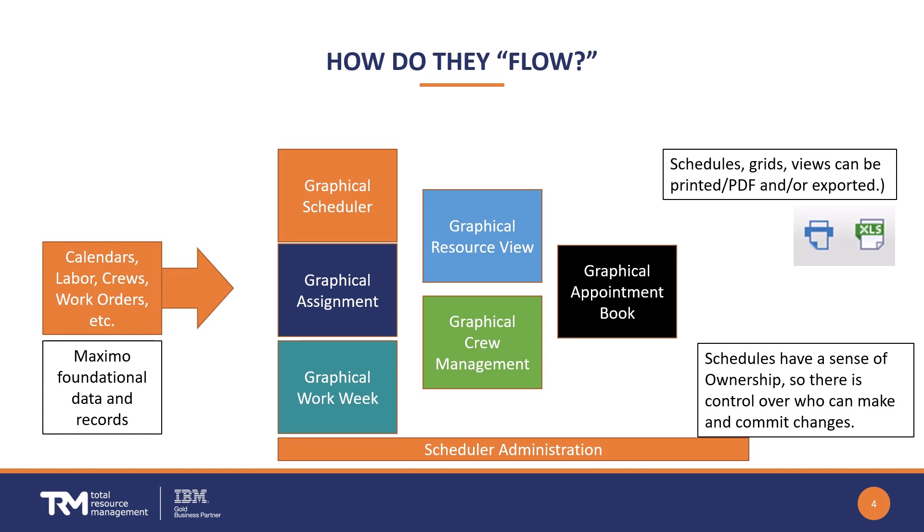Secondarily would probably be graphical assignment, where you're able to assign people different work. Then for folks out in the field, the graphical work week would be a good application for them to use — they can see what they need to focus on for the week based upon what you've done in the scheduler and the assignment app. Then there's the graphical resource view and graphical crew management, which are good for ongoing changes to who's available to do what. There's also functionality called the graphical appointment book, which has a traditional application behind it — useful for folks making appointments with customers. You're also able to print these schedules out in PDF form or export to Excel, and they also have a sense of ownership.